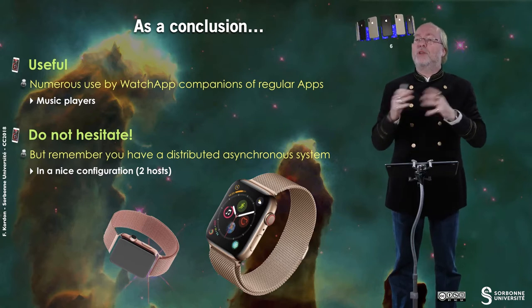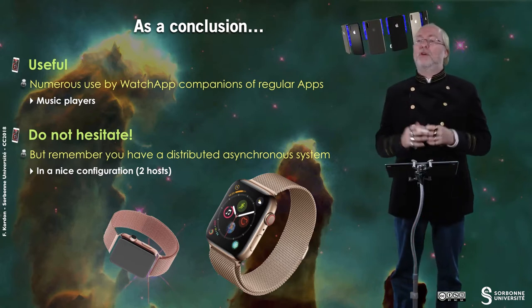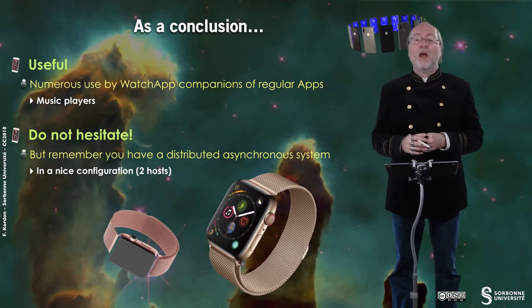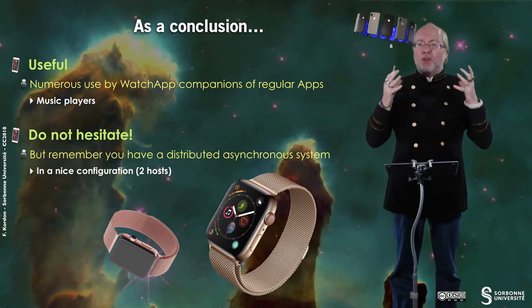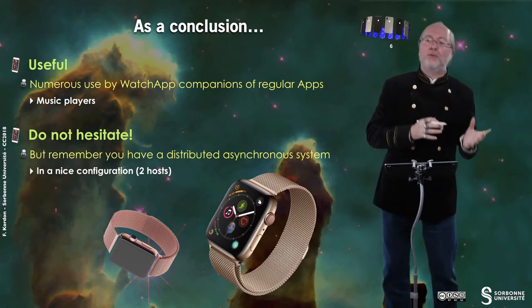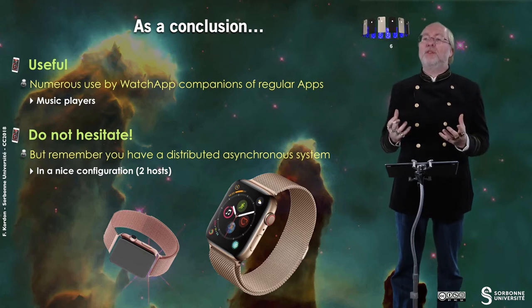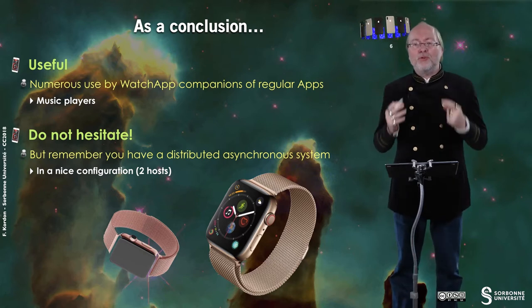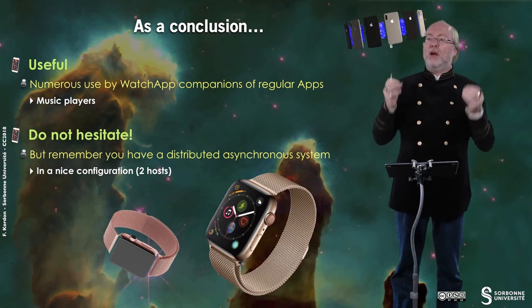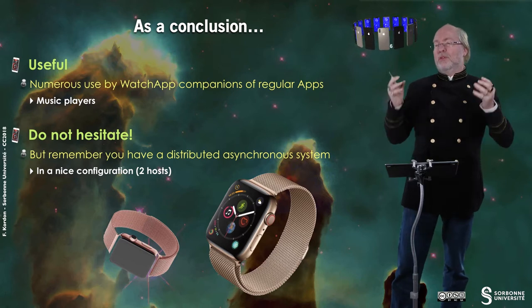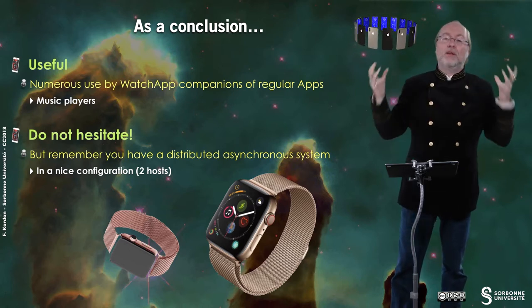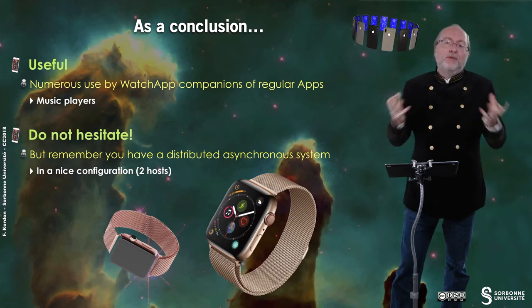When you want to change track, you interact with your watch without having to take your phone out of your pocket. This is a very classical situation where both counterparts of the application — on the watch and on the main device — are executing and collaborating together. However, you have to remember that you are in a situation of a distributed system with asynchronous communication, like a real network, because this is in fact networking — and it becomes complex even with just two hosts.